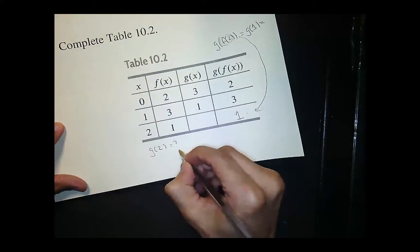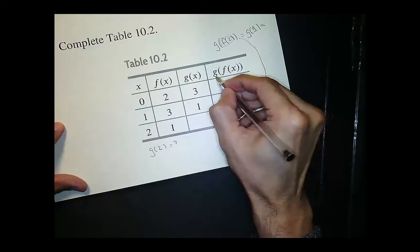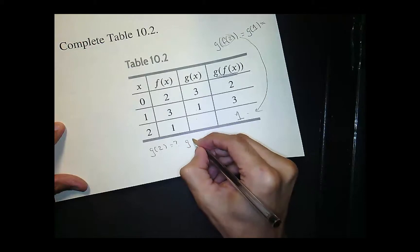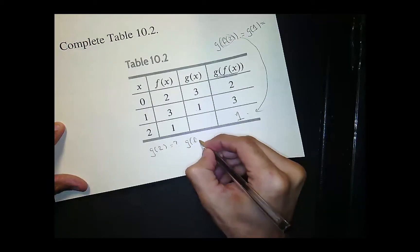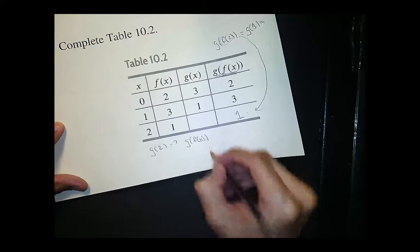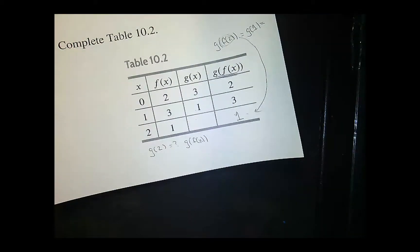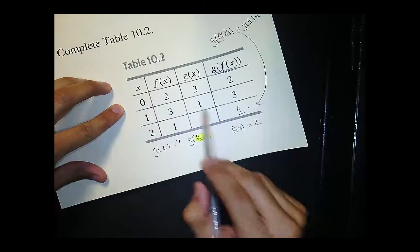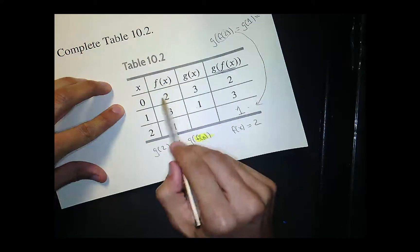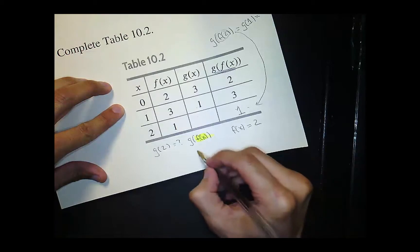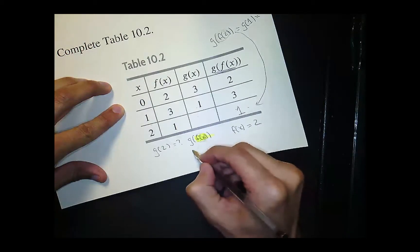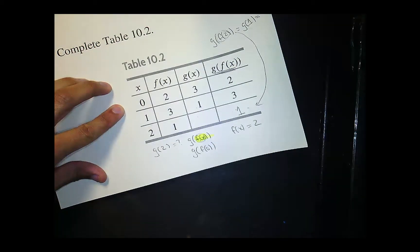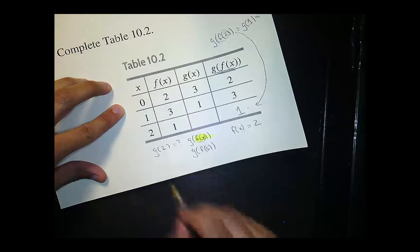Okay, well another way to write g of 2 because of what we're given here is we could say g of 2 is g of f of x. Okay, so now it becomes a matter of when does f equal 2. So f equals 2 when x is 0. So that means I can replace this with f of 0 because f of 0 is equivalent to 2.